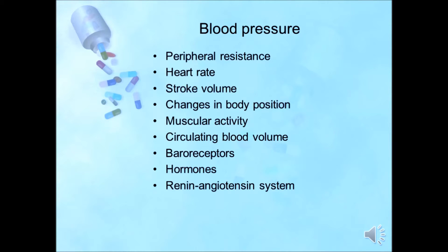So blood pressure can be affected by peripheral resistance, heart rate, stroke volume, changes in body position, muscular activity, circulating blood, baroreceptors, hormones, and the renin-angiotensin system.